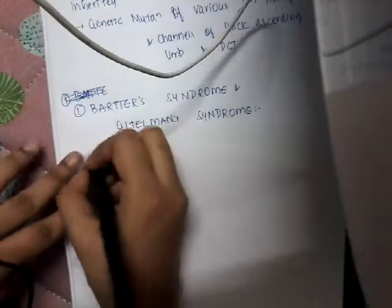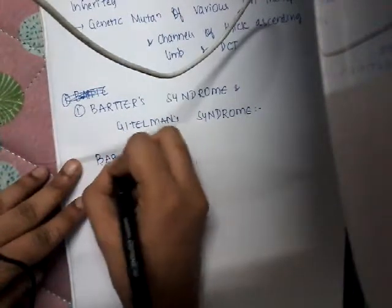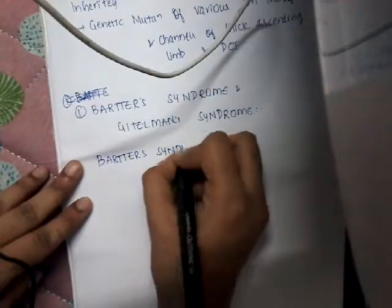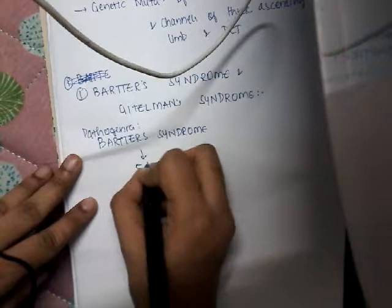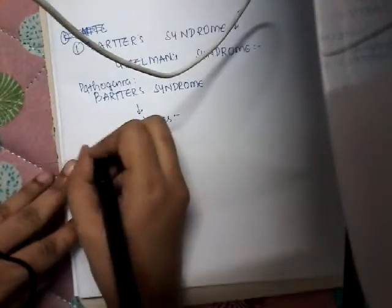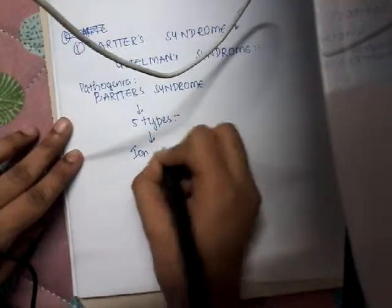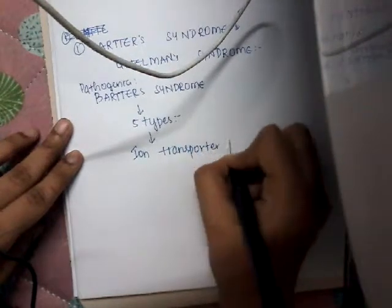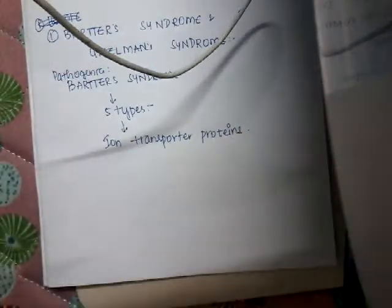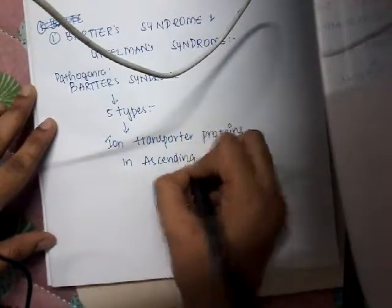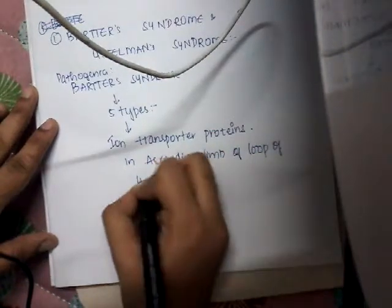Regarding pathogenesis and genetics: Barter syndrome is of five types, while Gitelman syndrome is of three types. All five types of Barter syndrome affect ion transporter proteins located in the ascending limb of the loop of Henle. I will draw a diagram and mention each type separately to make it easier to understand.